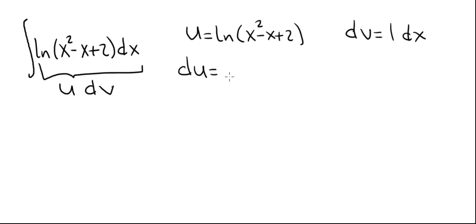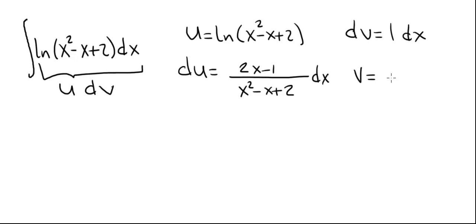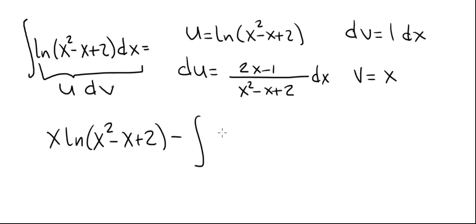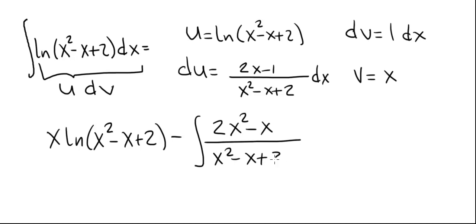So du equals the derivative of natural log of x squared minus x plus 2. That's x squared minus x plus 2 in the denominator, and 2x minus 1 in the numerator. And v must be x. So this is equal to u times v: x times natural log of x squared minus x plus 2, minus the integral of v du, that's 2x squared minus x divided by x squared minus x plus 2.